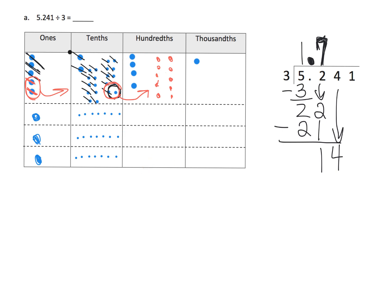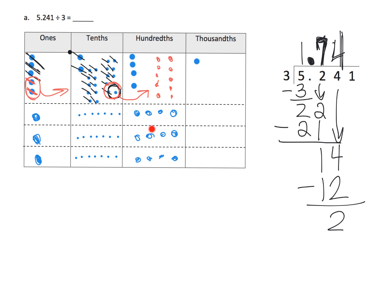Each group gets 4 hundredths — 3 groups of 4 equals 12, so we put 12 in the standard algorithm and subtract to get 2 left over. In the place value chart, we sorted the 14 hundredths into 3 groups of 4 and had 2 hundredths left over. That remainder of 2 matches the 2 shown in the standard algorithm after subtracting 12 from 14.